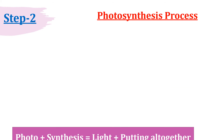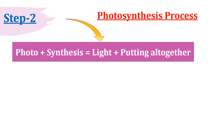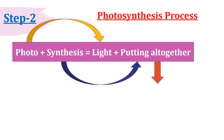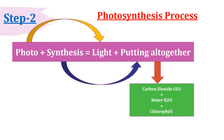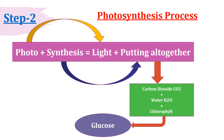Step 2 is the photosynthesis process. Photo plus synthesis equals light plus putting all together. The inputs for the plant are carbon dioxide (CO2), water (H2O), and chlorophyll. Just as we need some grains and rice to prepare our own food, plants also need compounds like carbon dioxide, water, and chlorophyll to prepare their food. After preparation, the food comes out in the form of glucose. That glucose is not stored directly as glucose but is stored in the plant in the form of starch, which is another carbohydrate.